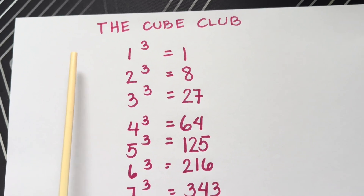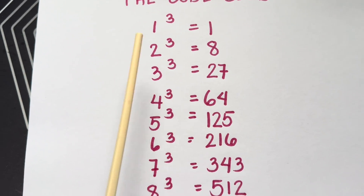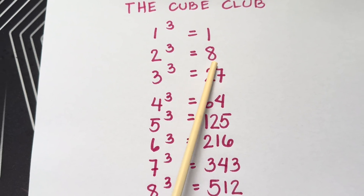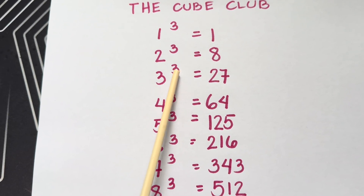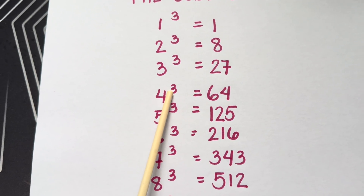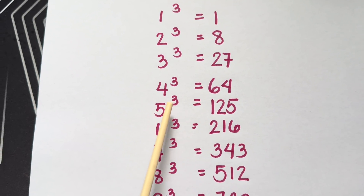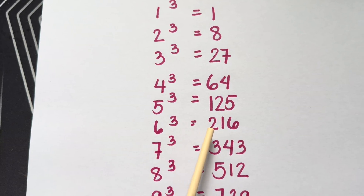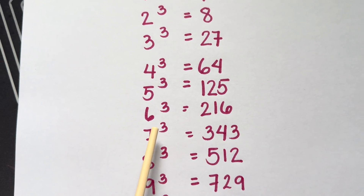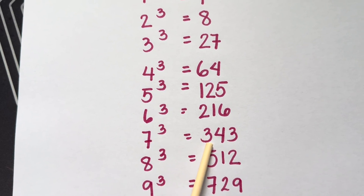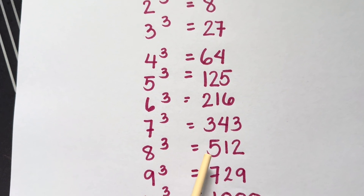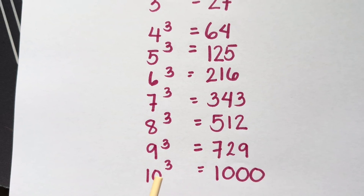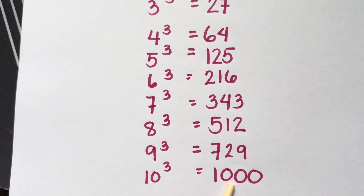And again, the Cube Club: one cube is equals to one, two cube is equals to eight, three cube is equals to twenty-seven, four cube is equals to sixty-four, five cube is equals to one hundred twenty-five, six cube is equals to two hundred sixteen, seven cube is equals to three hundred forty-three, eight cube is equals to five hundred twelve, nine cube is equals to seven hundred twenty-nine, and lastly ten cube is equals to one thousand.